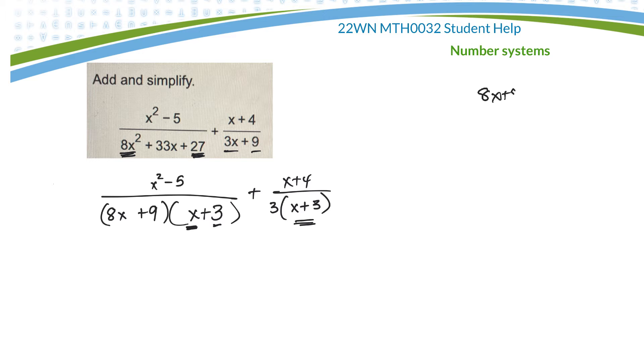Let me just go over here and foil that out and see if it comes out to that. So 8x squared plus 24x plus 9x plus 27. If I have these middle ones, I get 33x.